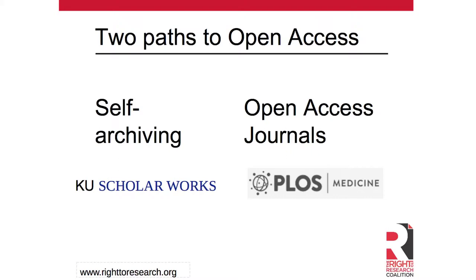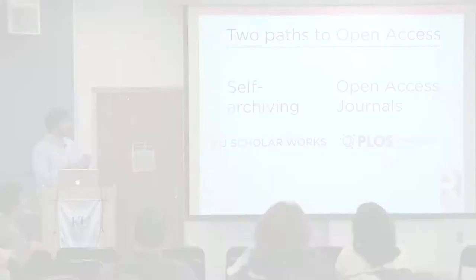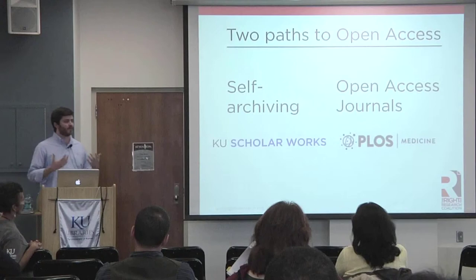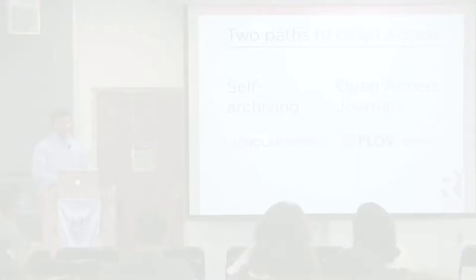There are two paths to open access — two ways to make an article freely available. The first is called self-archiving, where you essentially put the text of your manuscript into an open repository like KU ScholarWorks, regardless of where your article is published, even if it's in a subscription-based journal. A copy can be made available in most cases through KU ScholarWorks or other repositories such as PubMed Central.